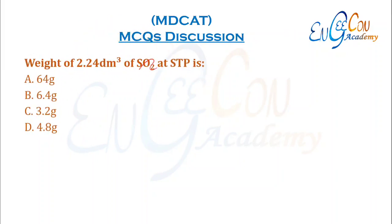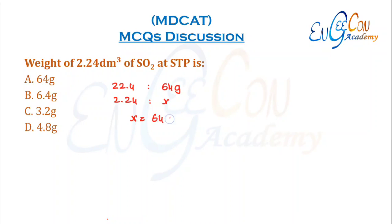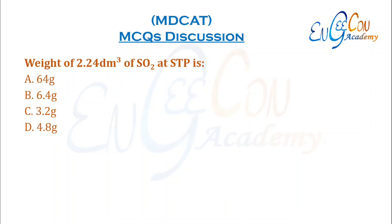Weight of 2.24 dm³ of SO2 at STP: 22.4 dm³ of SO2 = 64 g. So X = (64 × 2.24) / 22.4 = 6.4 grams. So B is the correct option.